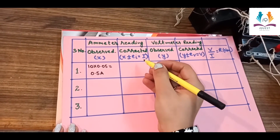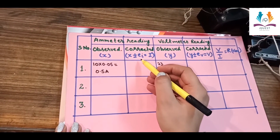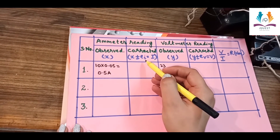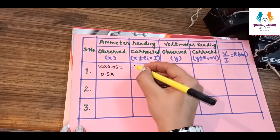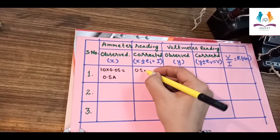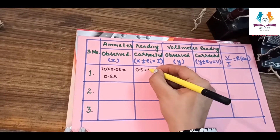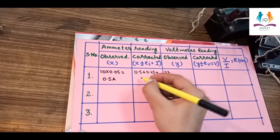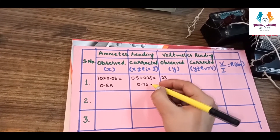To find the corrected reading, we add the zero error. Since the needle was past zero when the rheostat was at the zero position, the corrected reading is the observed reading 0.5 plus the error 0.25, which equals 0.75 ampere.